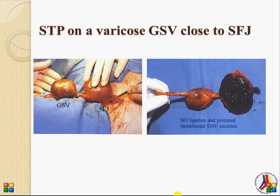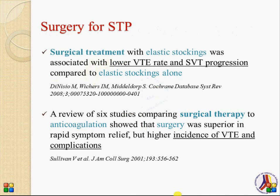In a case where there is a varicose thrombosed main trunk of the great saphenous vein close to the saphenofemoral junction, excision could be a better approach than anticoagulation. A Cochrane review found that surgical treatment with elastic stockings was associated with lower DVT rate and SVT progression compared to elastic stockings alone. A review of six studies comparing surgery to anticoagulation showed surgery was superior for rapid symptom relief, but was associated with higher incidence of venous thromboembolism and complications.